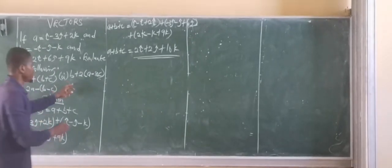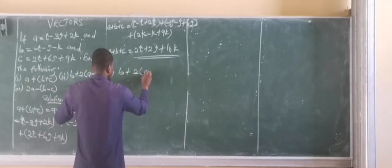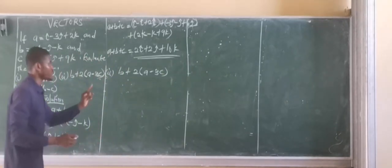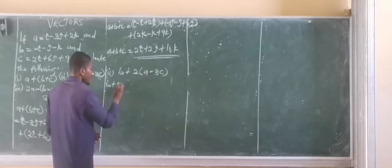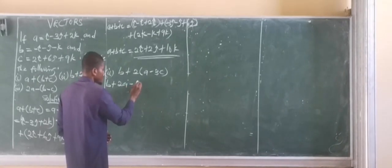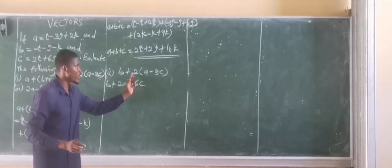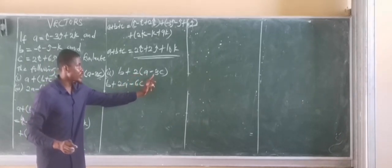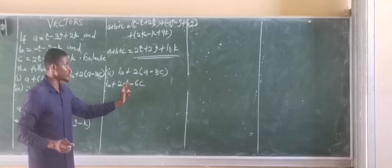The second problem says you should find B plus 2(A minus 3C). So this is a little bit tricky but not difficult. If we expand these brackets, we are going to have B plus 2 times A to give us 2A, and 2 times minus 3C equals minus 6C. So this is what they are actually asking us to evaluate: B plus 2A minus 6C.